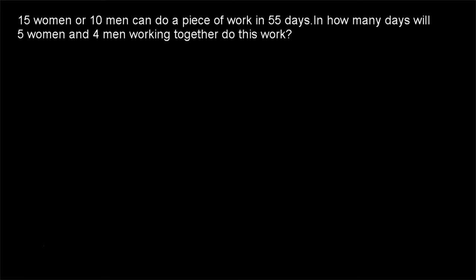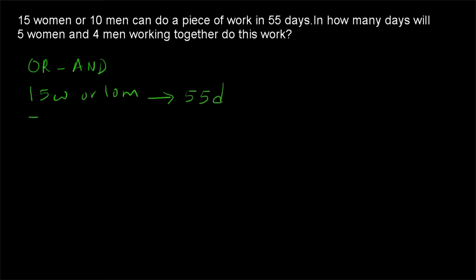Example 2: 15 women or 10 men can do a piece of work in 55 days. In how many days will 5 women and 4 men working together do this work? This is the same kind of 'or and' problem, so we apply P1×T1 = P2×T2 directly.